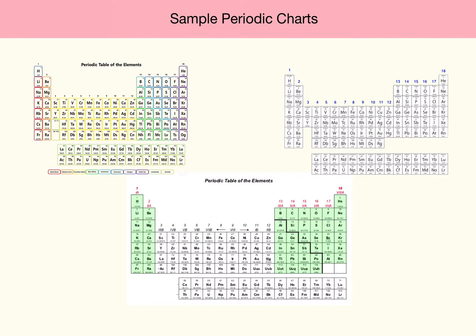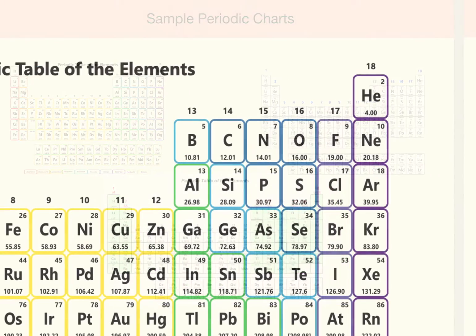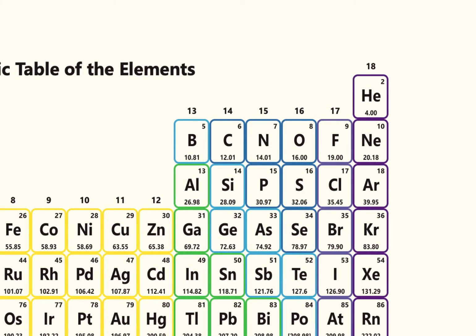Periodic charts come in a range of sizes and colors and different amounts of information, but they all share something in common. They all give a minimum of three pieces of information: the chemical symbol, the atomic number, and the atomic mass.